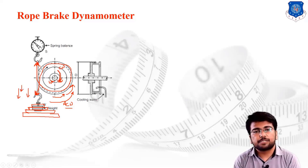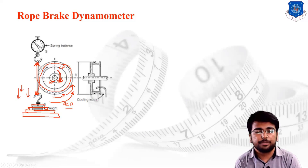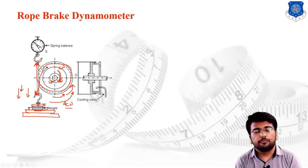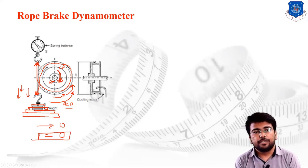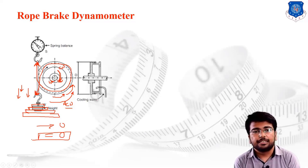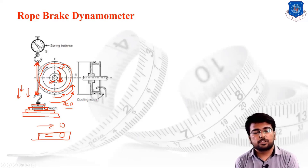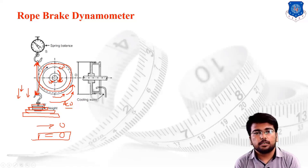The frictional resistance is generated over the wheel, causing the wheel's speed to decrease drastically. As we continue increasing the weight, the shaft speed tends toward zero. Once the speed becomes zero, the wheel automatically stops. Whatever reaction is generated inside the wheel is noted down, and by multiplying it with the radius of the wheel, we can easily calculate the torque or shaft power generated at the wheel.